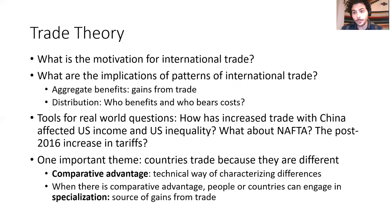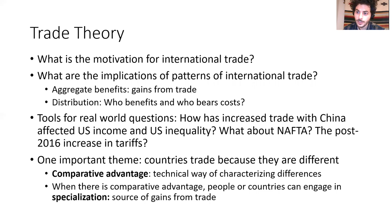We could also ask how increased trade with China has affected Chinese income and Chinese inequality. We could think about NAFTA—a free trade agreement between the United States, Canada, and Mexico that lowers tariffs on goods and services traveling between those borders and reduces administrative burden, making trade easier. More recently, post-2016, the United States increased tariffs on many imports, and it's an important question how this affected the United States overall, different groups of workers and consumers, or the countries we raised tariffs on.